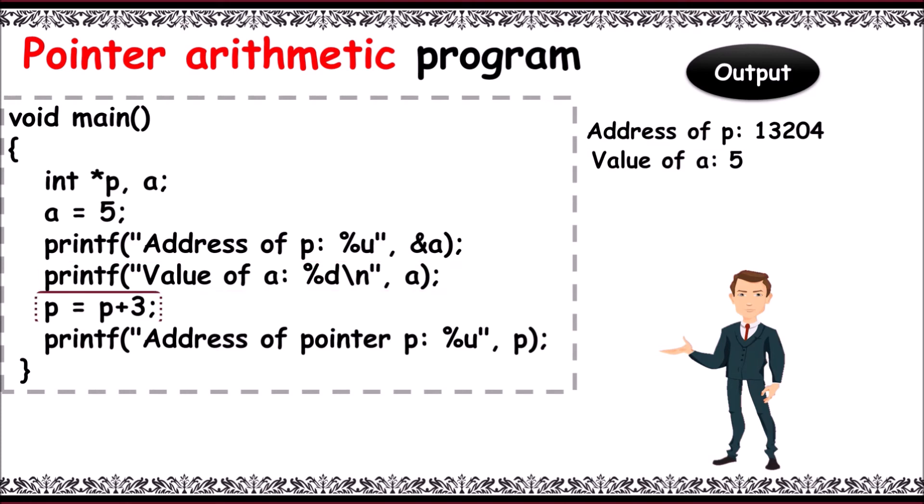And next, p equals p plus 3. Pointer arithmetic operation is applied here. With this, as p is of int type, it gets incremented by 6.